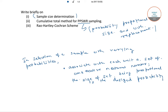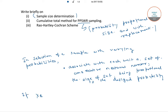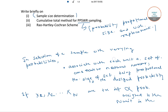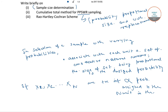Now, if x1, x2, so on till xN are the positive integers that are proportional to the probabilities assigned to the N units in the population.